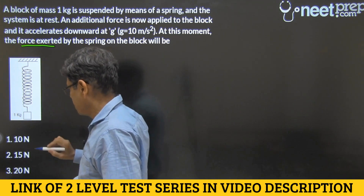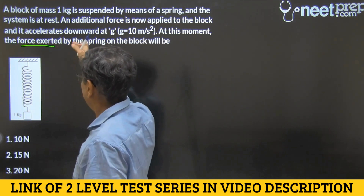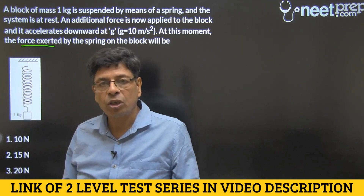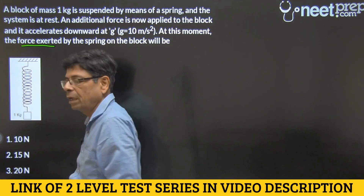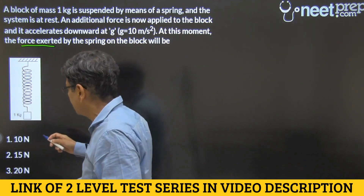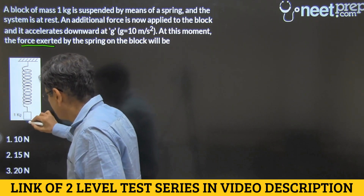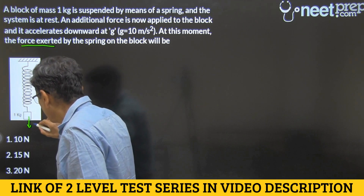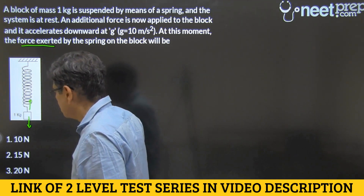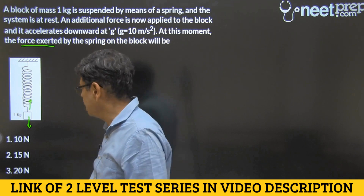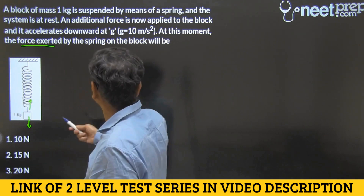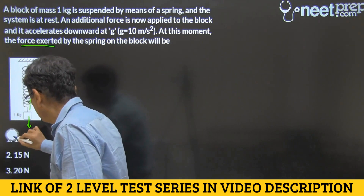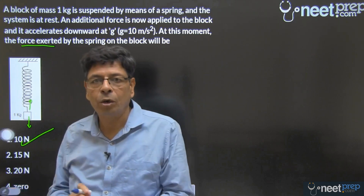So the spring applies the same force on our block as it was applying before we exerted the force. Since the block was in equilibrium before, the spring must have been applying a force equal to mg in the upward direction. For a 1 kg body with g = 10, that is 10 newtons — so we tick option 1.